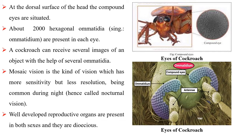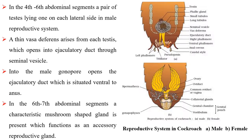A cockroach can receive several images of an object with the help of several ommatidia. Mosaic vision is the kind of vision which has more sensitivity but less resolution, being common during night. Well-developed reproductive organs are present in both sexes and they are dioecious. In the fourth to sixth abdominal segments, a pair of testes lying one on each lateral side in the male reproductive system.